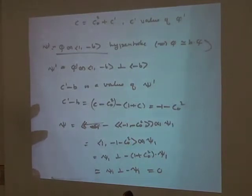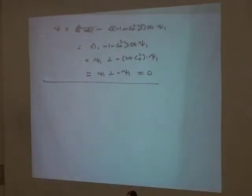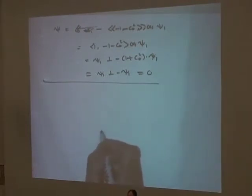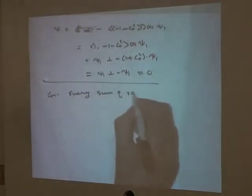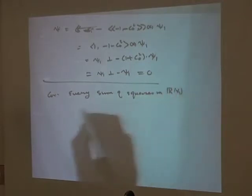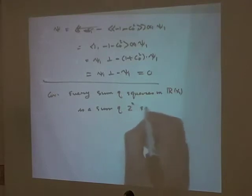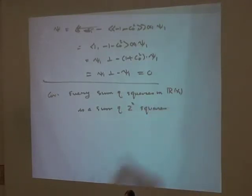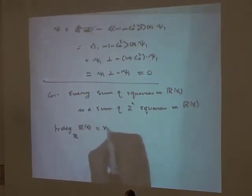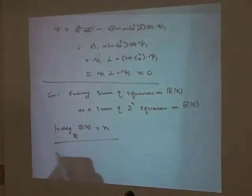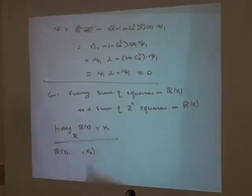So every sum of squares is represented by every n-fold Pfister form. Corollary: every sum of squares in R(x) is a sum of 2^n squares in R(x), where R(x) is a function field in n variables — that is, the transcendence degree of R(x) over R is n. In particular, in R(x1, ..., xn), every sum of squares is a sum of 2^n squares.